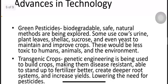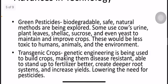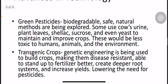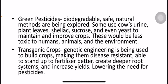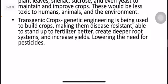Other natural ingredients such as slag, sucrose, and yeast are being explored to maintain and improve crops, and could be less toxic to humans, animals, and the environment. Transgenic crops through genetic engineering are being used to make crops disease resistant, better able to stand up to conditions, create deeper root systems, and lower the need for fertilizer and pesticides.